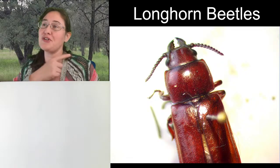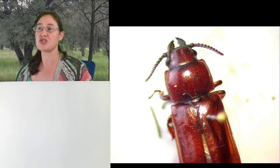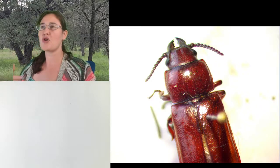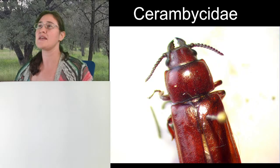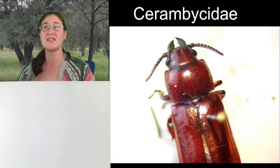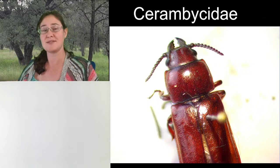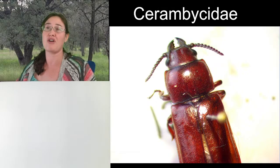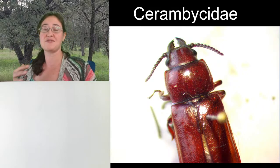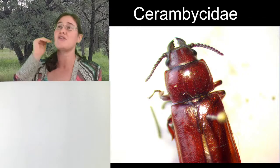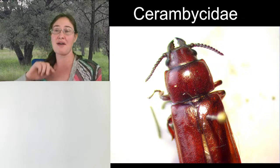This is a longhorn beetle too, and its antennae are not broken off. So longhorn beetle is a family of insects - Cerambycidae is the whole family of longhorn beetles - and most cerambycids, or most longhorn beetles, are going to have very, very long antennae. But there are many subfamilies of cerambycids. You've got family, then subfamily, and in insects you even have tribes, then genus and species.